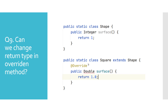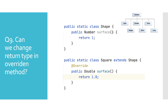The example displayed here shows that we cannot use the wrapper class Double as a return type in the overridden method surface of the Square class when Integer is returned from the base class Shape. Moving on to the next example, we change the return type of the surface method in the base class Shape, and Java does not complain anymore.